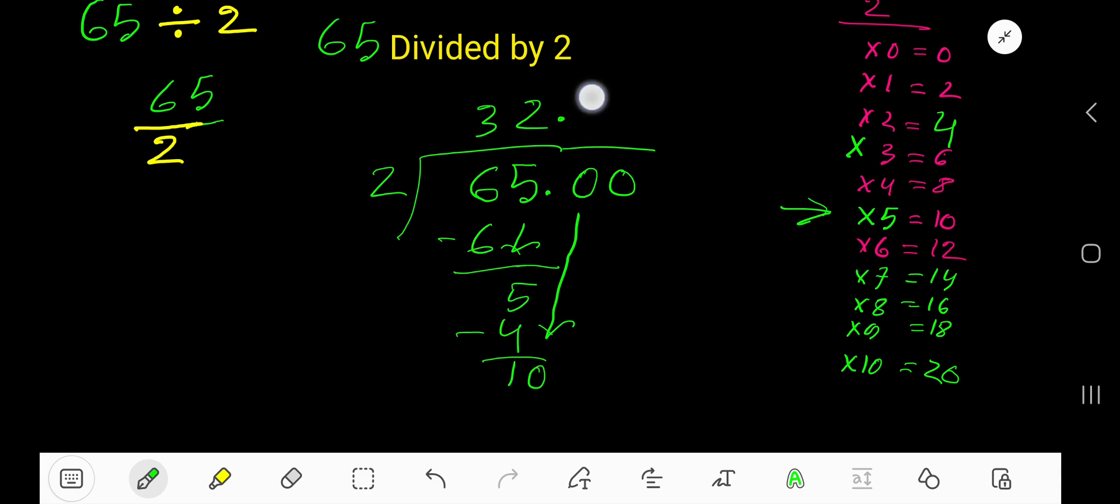2 goes into 10. 5 times. Write 5. 5 times 2, 10. If you subtract, you are getting 0. That is 32.5 is your answer.